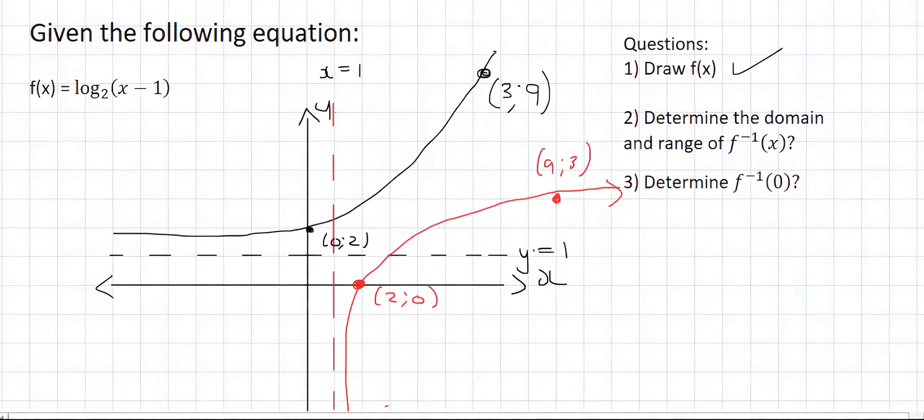Number 2 says determine the domain and range of the inverse. Now you've got to be careful. This is the original. And so the inverse is the exponential graph. So they're actually just asking us for the domain and range of the exponential graph. Well, you can see that the exponential graph goes all the way to the left and all the way to the right. So its domain, which is the x values, is any real number.